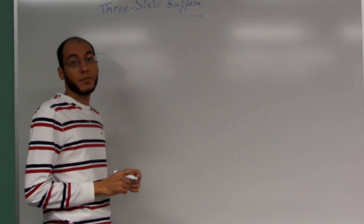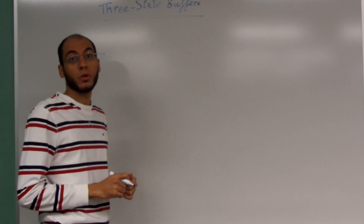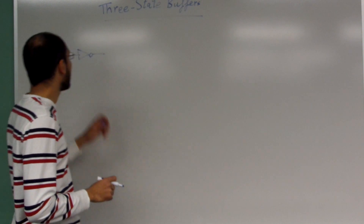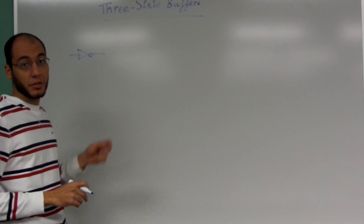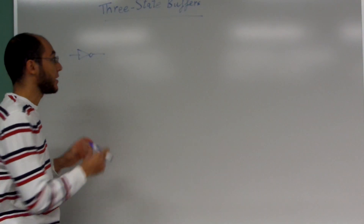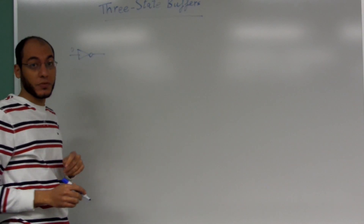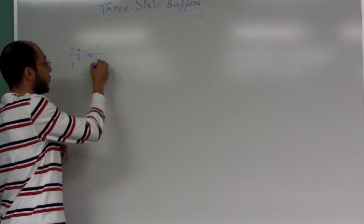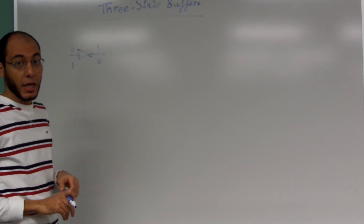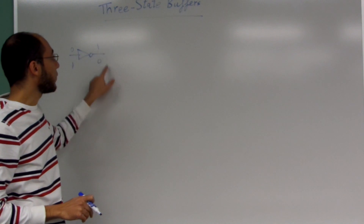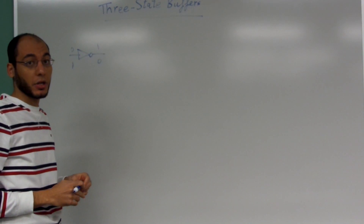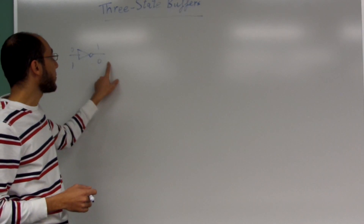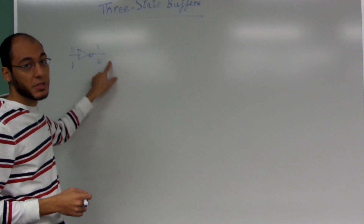Hello everyone. In this video I'm going to show you how three-state buffers work. Consider a NOT gate: if it has an input of 0, the output would be 1, and if it has an input of 1, the output would be 0. This is pretty much all the possible outputs that could come out of any gate, whether it's a NOT gate or an AND gate or whatever. The only possible outputs are either 0 or 1.